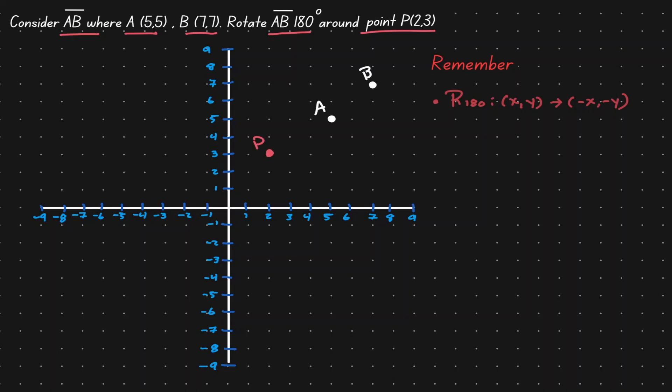Now let's connect those points. Remembering that our objective is to rotate 180 degrees — don't forget that we have a rule for that. If you want to rotate 180 degrees, given any coordinate point, the image is going to be defined by negating both coordinates. But there is a condition: the center of rotation needs to be at the origin.